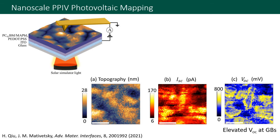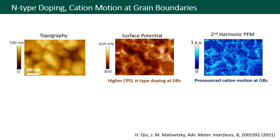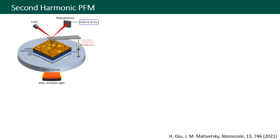Interestingly, we saw that the open circuit voltage showed an increase at some grain edges. To investigate the cause of the increased open circuit voltage at grain boundaries, we used Kelvin probe force microscopy and second harmonic piezo force microscopy, which both show an elevated response at grain boundaries. The increased surface potential measured by Kelvin probe is associated with n-type doping, while the second harmonic PFM signal has been connected with cation motion.